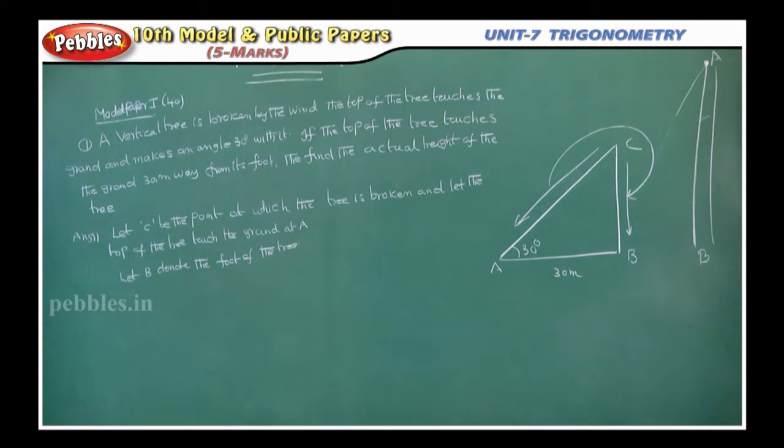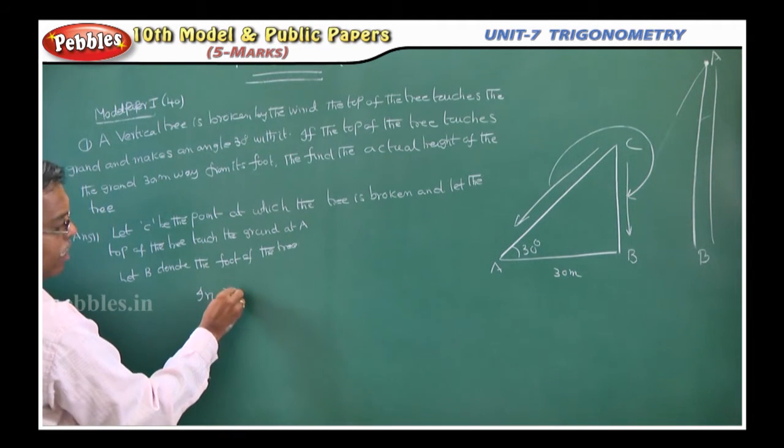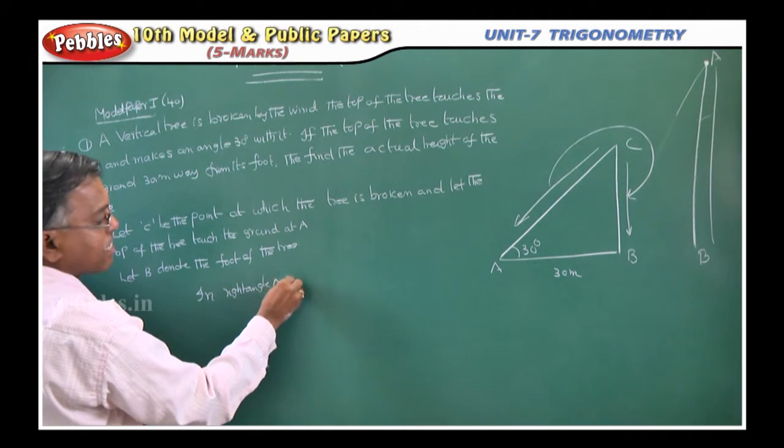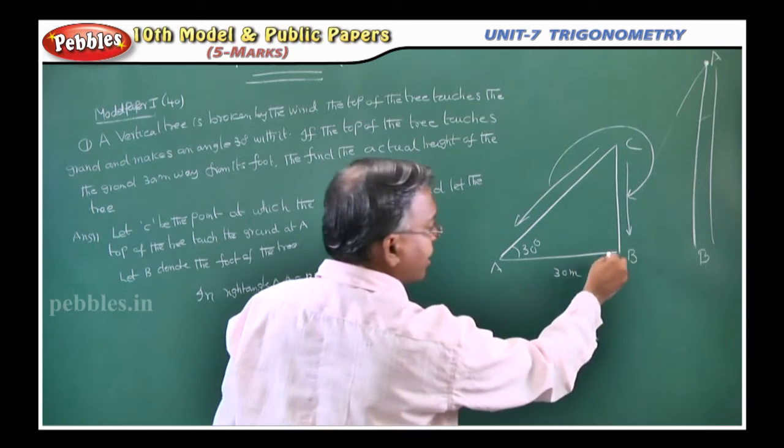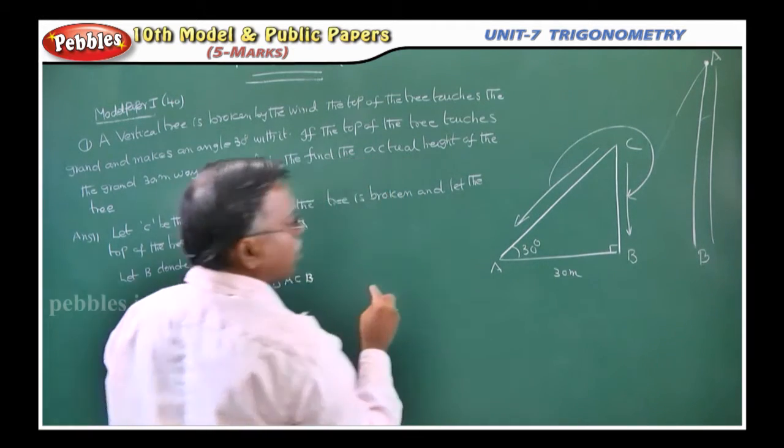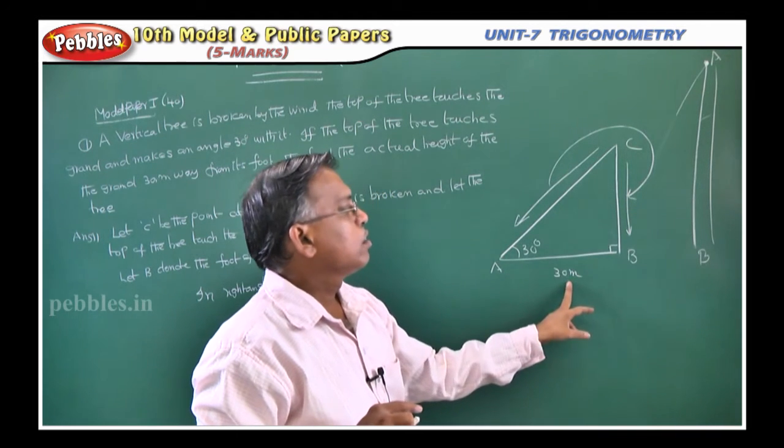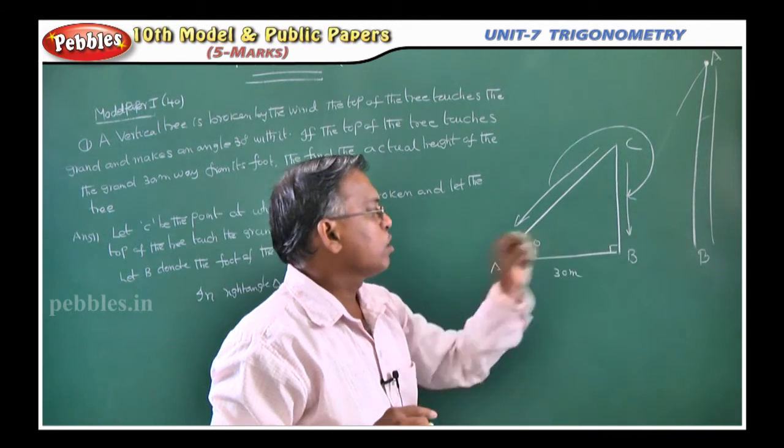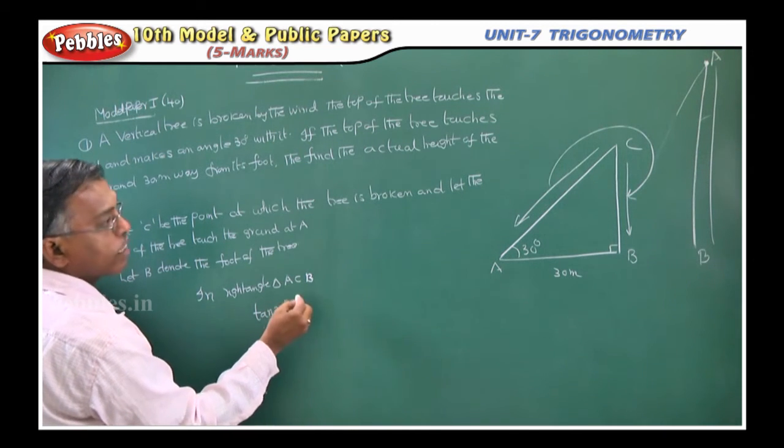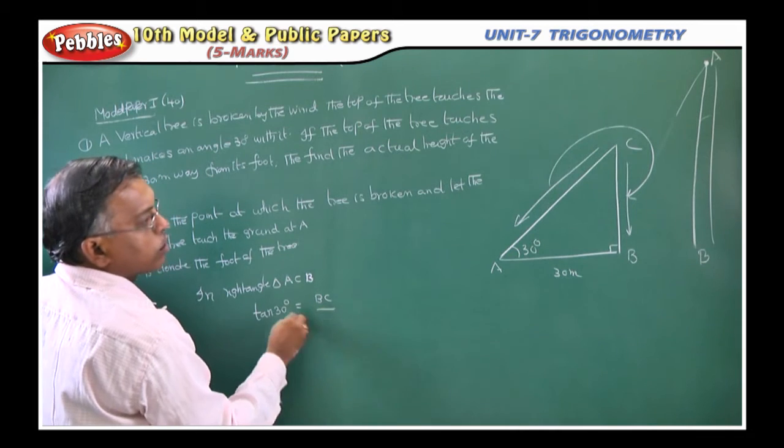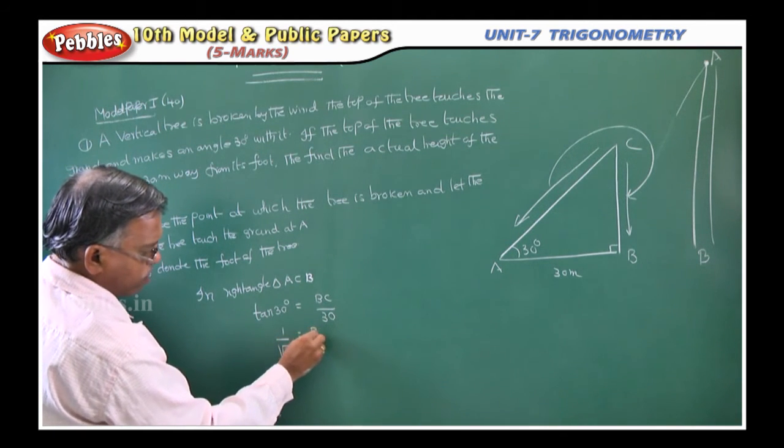Listen carefully, in right angle triangle ACB, why right angle triangle? Here angle is 90 degrees. Now you apply tan 30 because tan 30, opposite side by adjacent side. You will get BC. Tan 30 is equal to BC by 30. Now what is tan 30? 1 by root 3. So 1 by root 3 is equal to BC by 30.